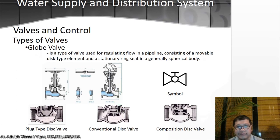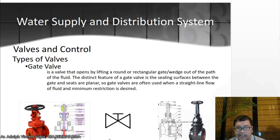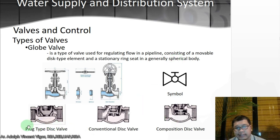Then you have the globe valve — a type of valve used for regulating flow in a pipeline, consisting of a movable disc-type element and a stationary ring seat in a generally spherical body. This is its symbol. If you remember the gate valve symbol, the globe valve is similar but with a circle added. The different types include: plug-type disc valve, conventional disc valve, and composition disc valve.